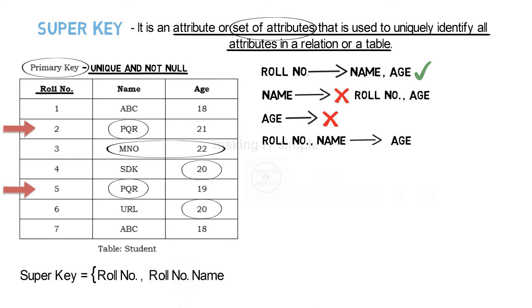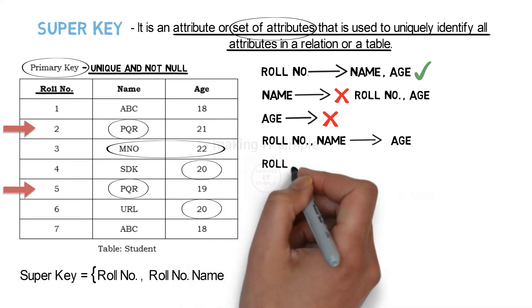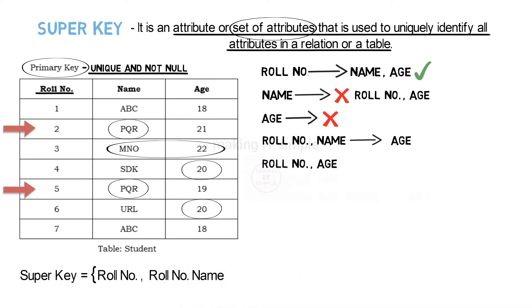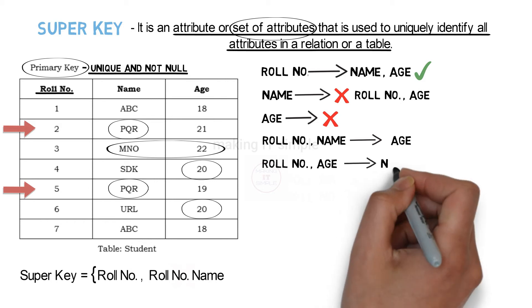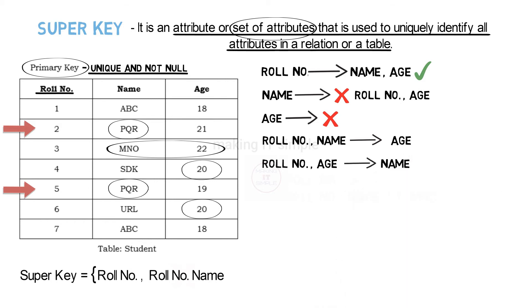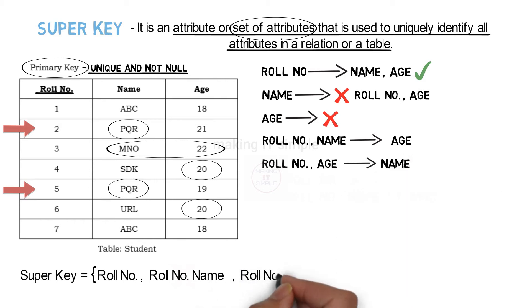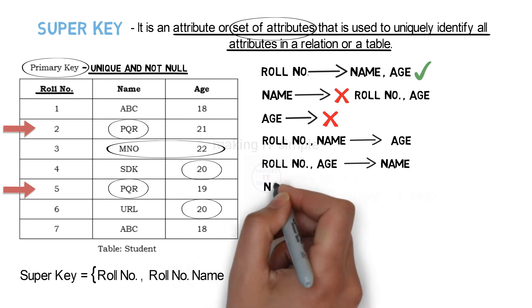Now if we consider age with role number, a similar case applies — using role number and age we can identify name. So {role number, age} is also a super key.